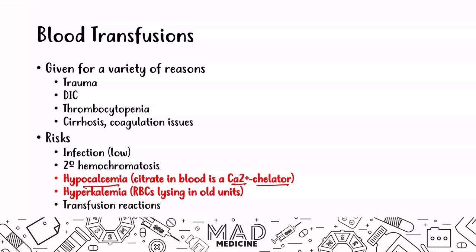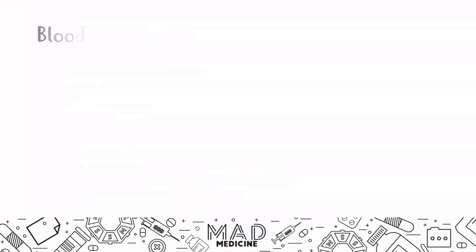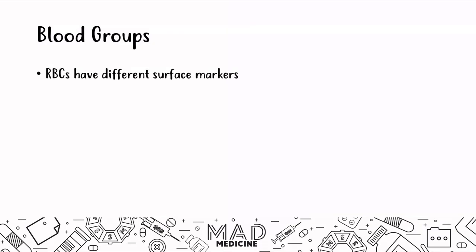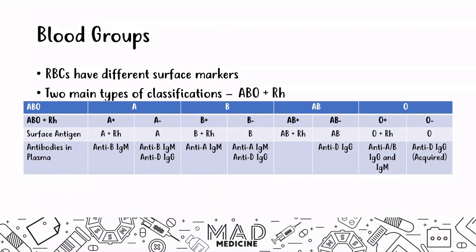Transfusion reactions can also occur — this will be covered in a later video. We have also made a video on blood groups. Essentially, red blood cells have different surface markers that are present to classify certain red blood cells into certain groups. There are two main types of classifications you need to know for Step 1: the ABO classification and the Rh classification.